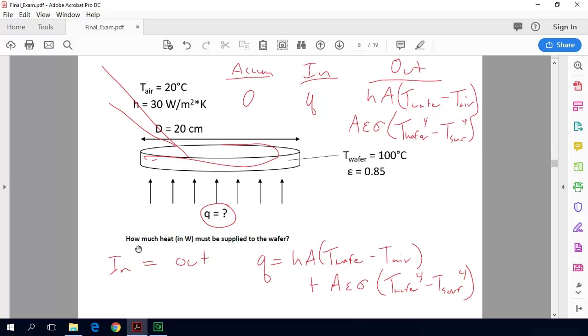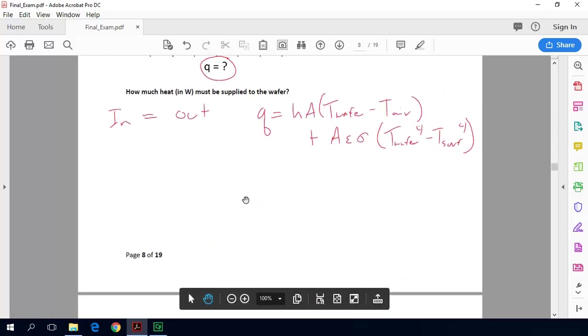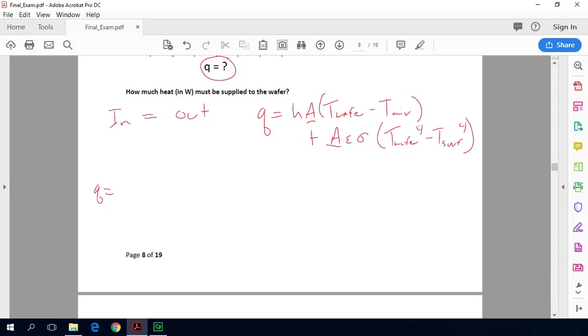So now it's just plugging and chugging all those terms in the equation. So Q is equal to, I'll do a little bit of simplification, I'm going to factor out this area, pull that out of the equation. So we end up with the upper area, the area of the upper surface of this wafer is pi fourths times its diameter squared. So it was 20 centimeters in diameter.